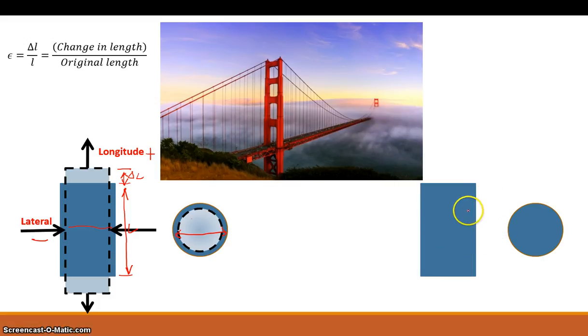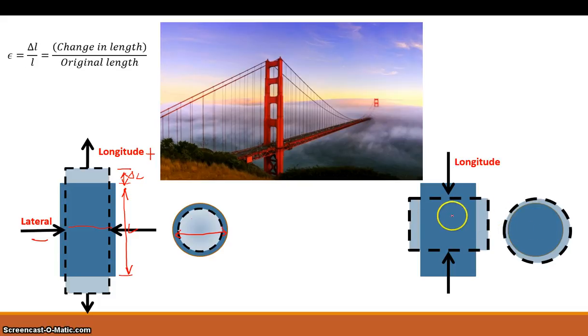What's going to happen? You're going to end up with a different type of strain in the other direction. If we've got a compressive load, the longitudinal strain is going to make this member shorter. We're putting a load axially and longitudinally, and it contracts in that direction.